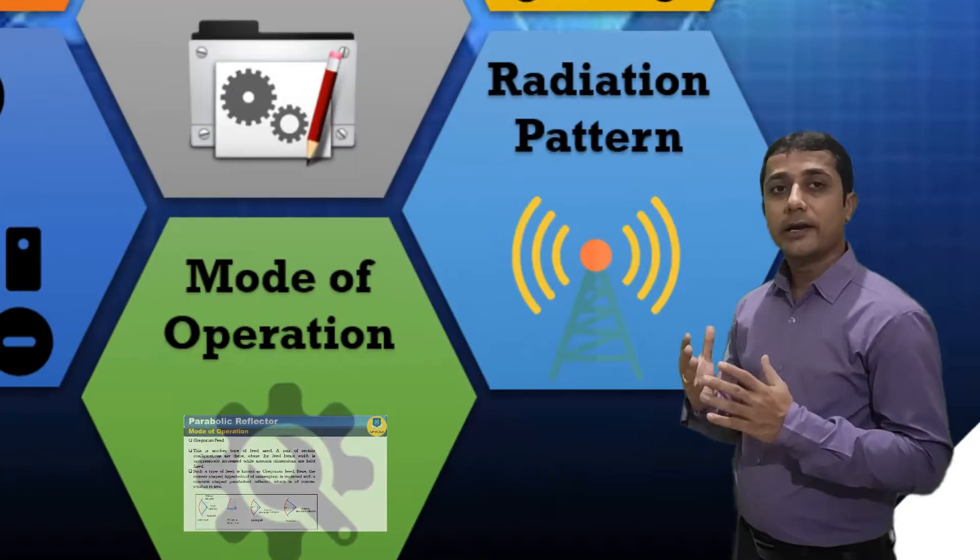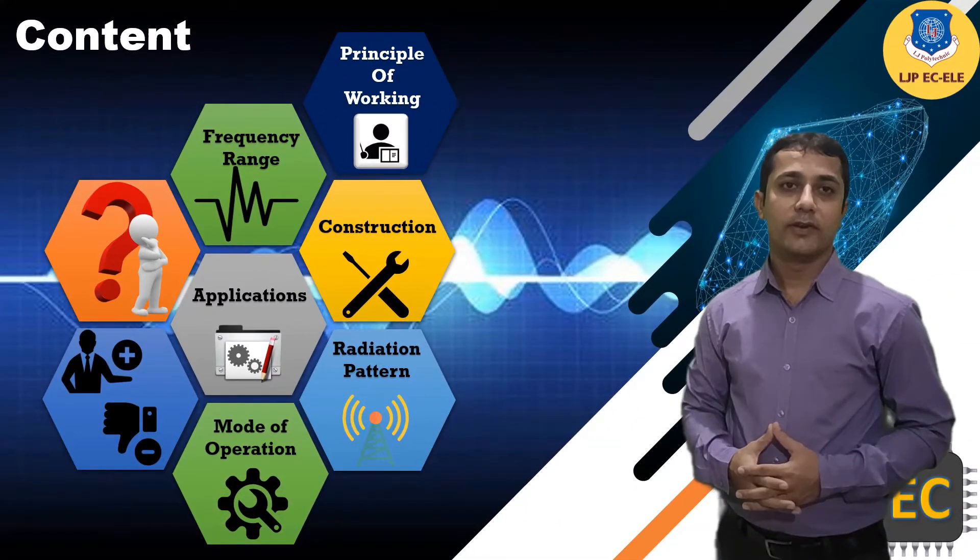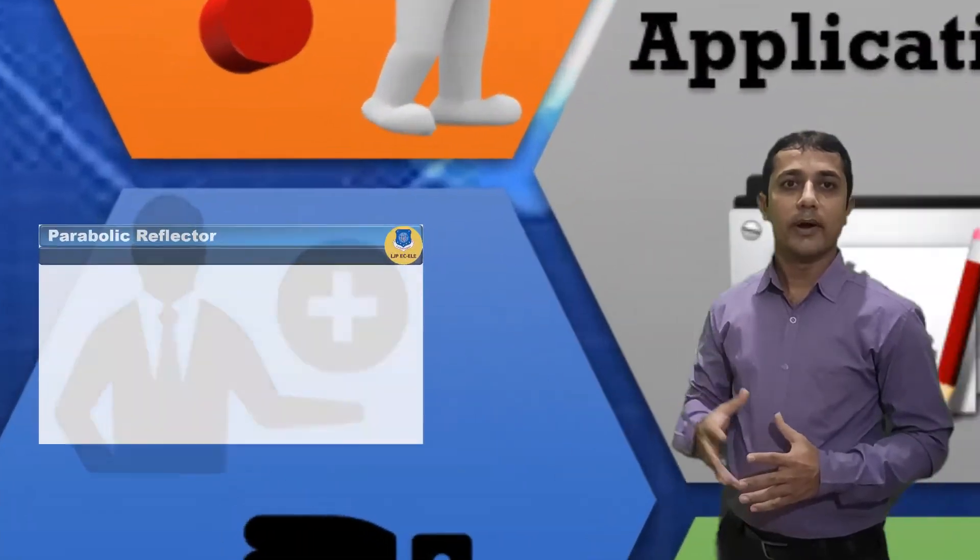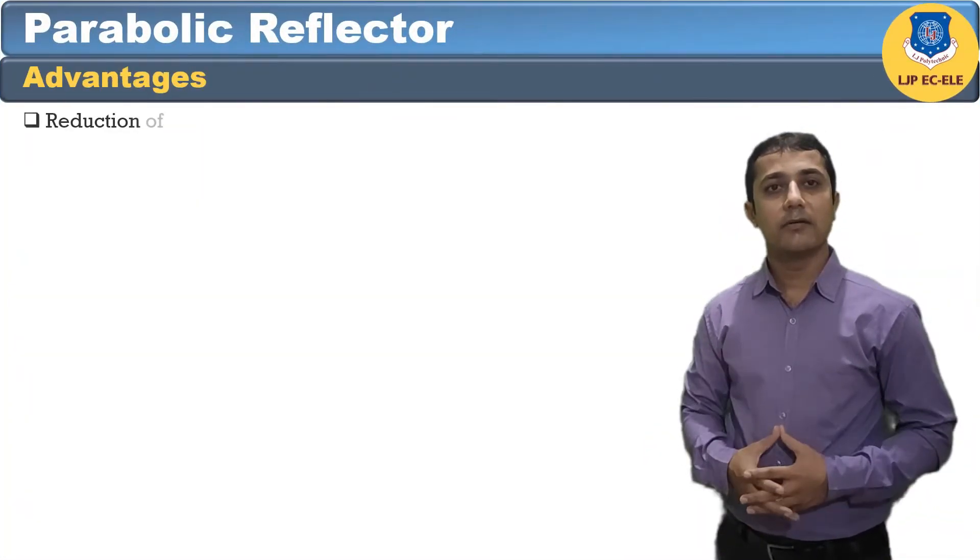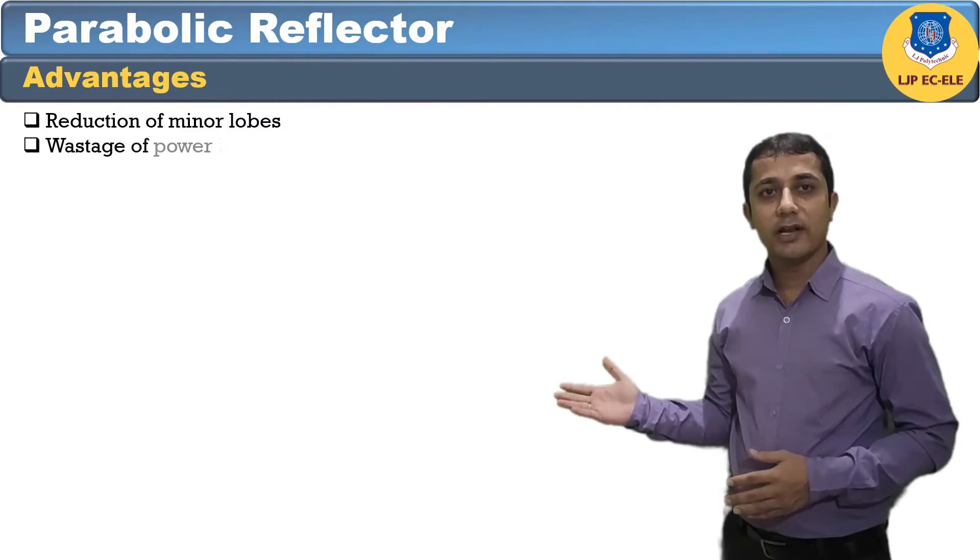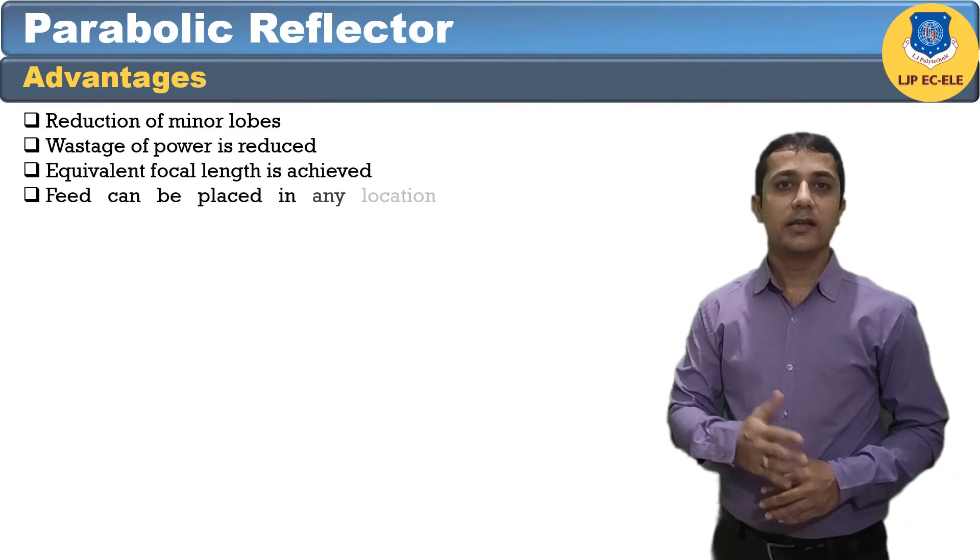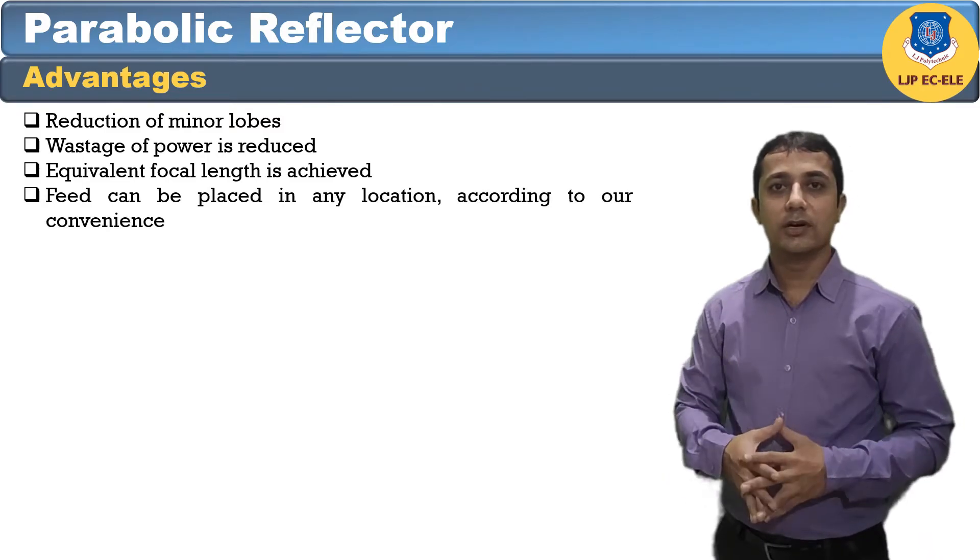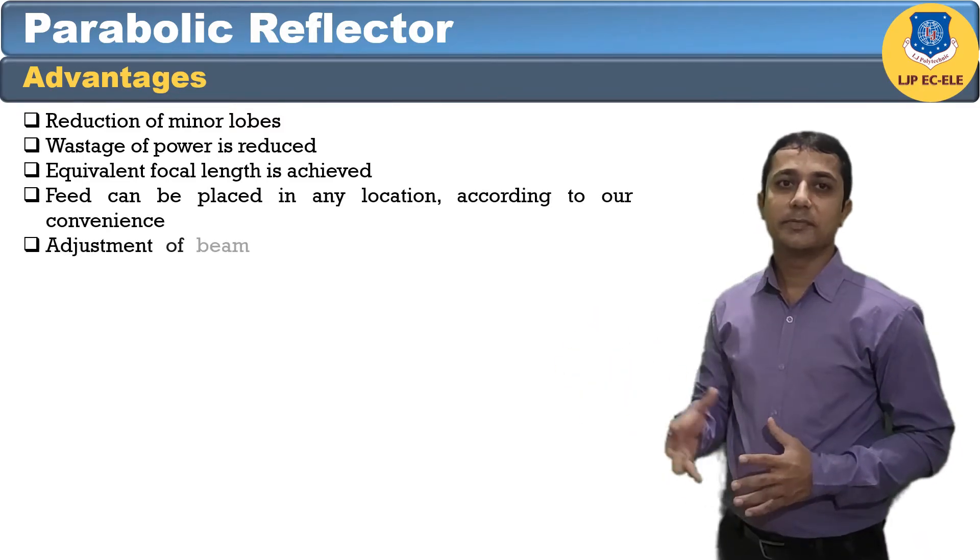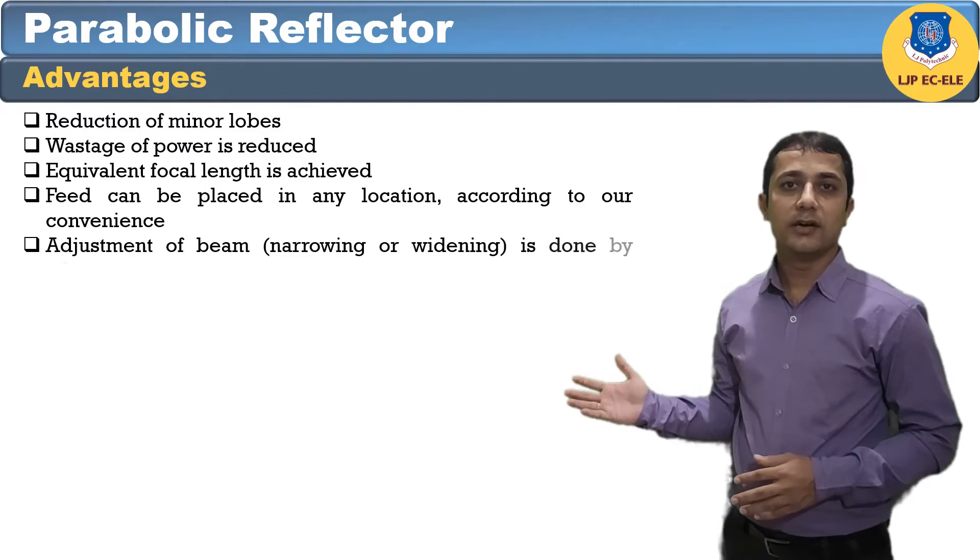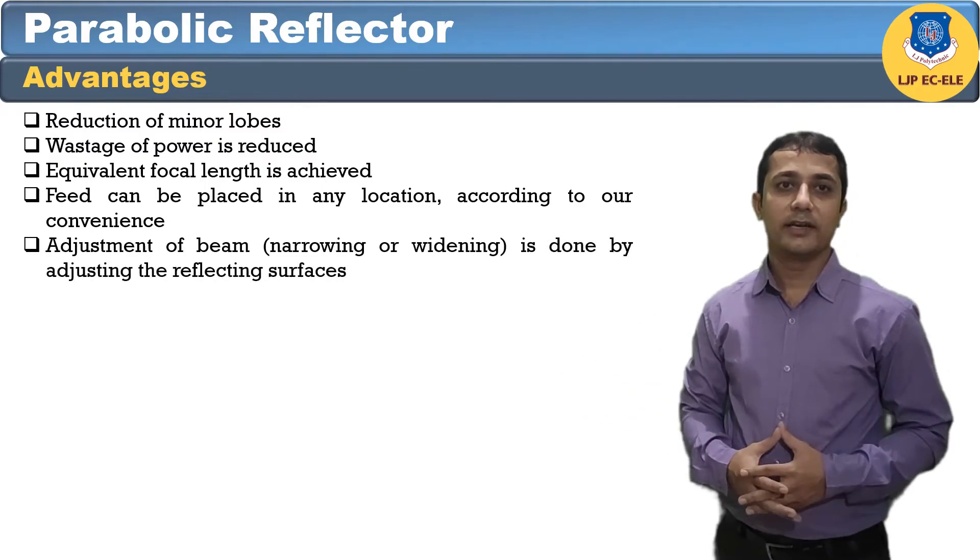Now let us see the advantages of parabolic reflector. Reduction of minor lobes. Wastage of power is reduced. Equivalent focal length is achieved. Feed can be placed in any location according to our convenience. Adjustment of beam is done by adjusting the reflecting surface.